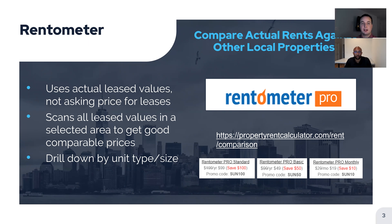What it does is scan all the lease values in a selected area so you can get good comparable prices for the property you're looking at. Typically it's going to be a two, three, or four mile radius around your property. It will look at all the other properties available, and you'll be able to drill down by unit type and unit size to get a really good comparison of what's in the area.